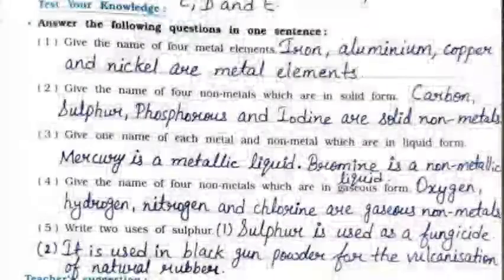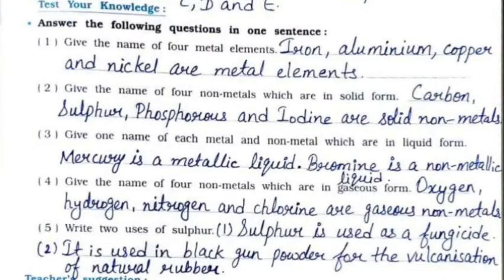Now test your knowledge — answer the following questions in one sentence. First: name four metal elements — iron, aluminium, copper, and nickel are metal elements. Second: name four non-metals which are in solid form — carbon, sulfur, phosphorus, and iodine are solid non-metals.